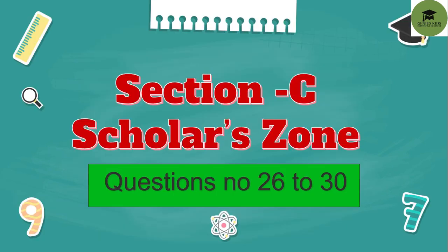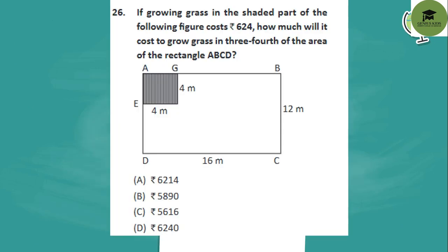Now let's see the Scholar Zone or achiever section — you can see the Scholar Zone section also has five questions. If growing grass in the shaded part of the following figure costs Rs.624, how much will it cost to grow grass in three-fourths of the area of the rectangle ABCD?